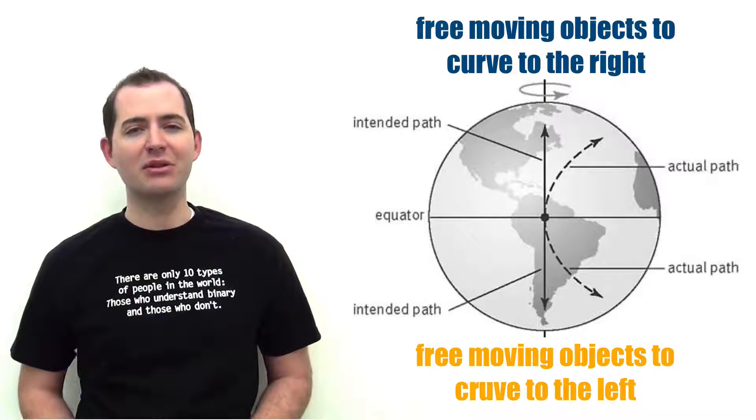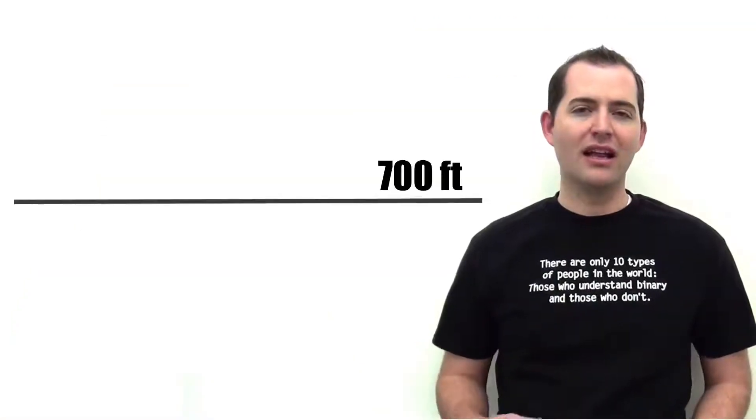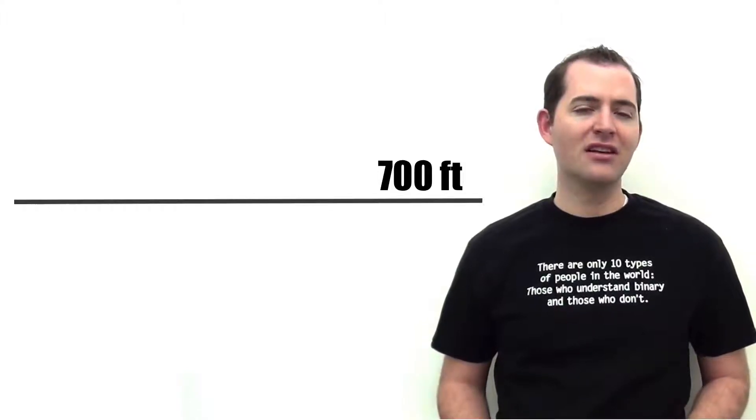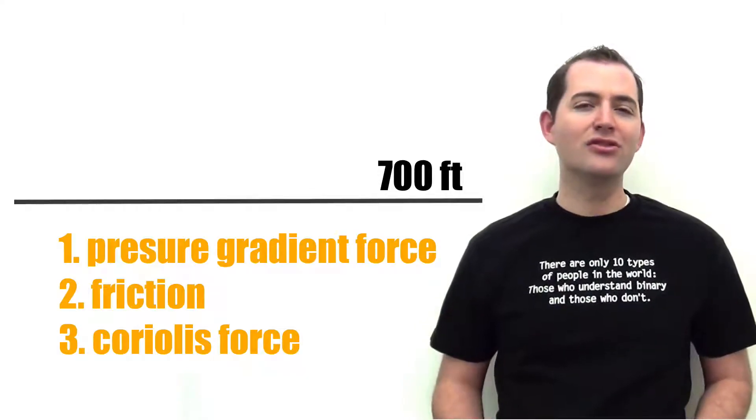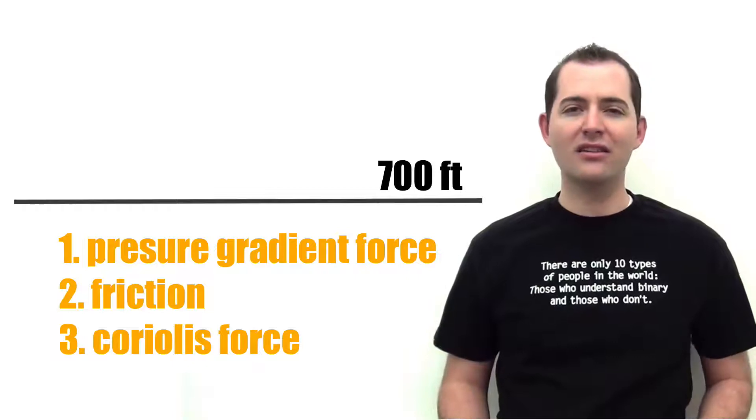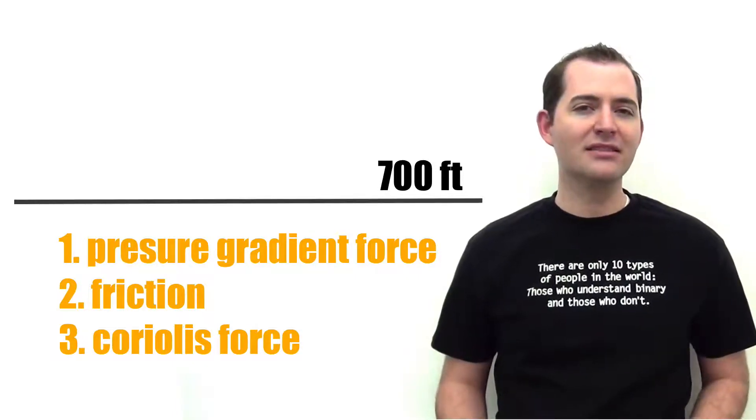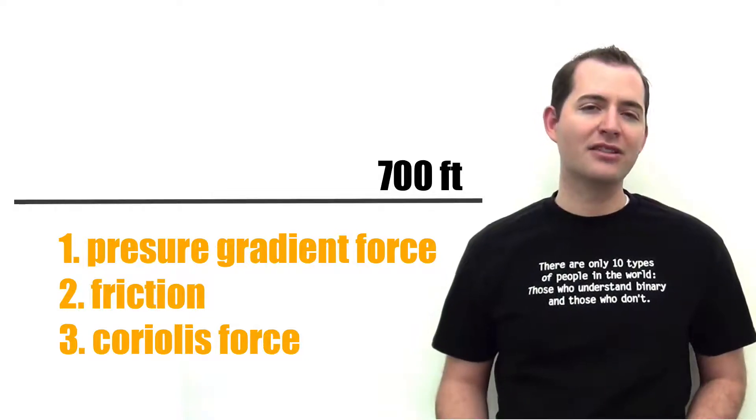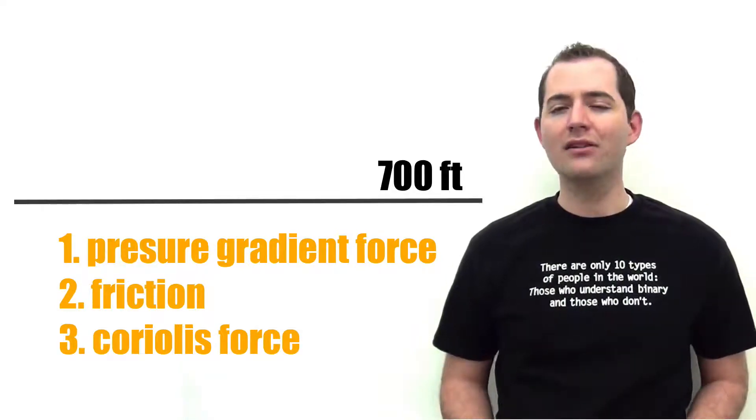It's important to note that winds below 700 feet above the Earth's surface are impacted by two additional forces besides the pressure gradient force. These winds are impacted by the frictional force and the Coriolis force.